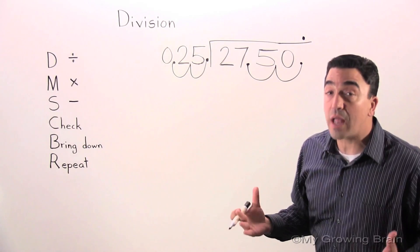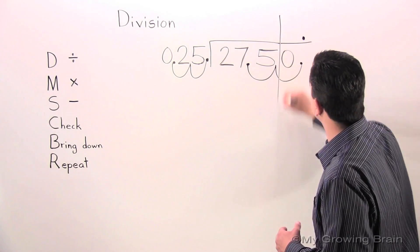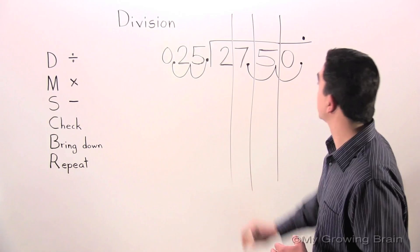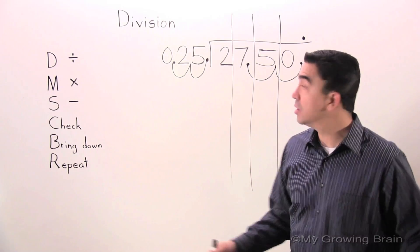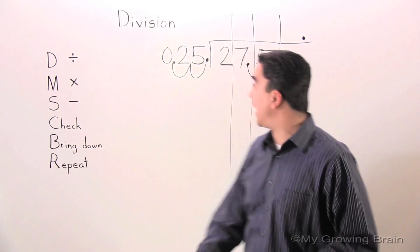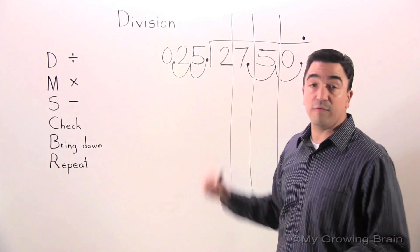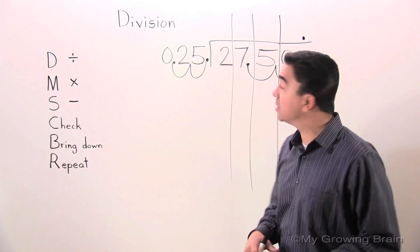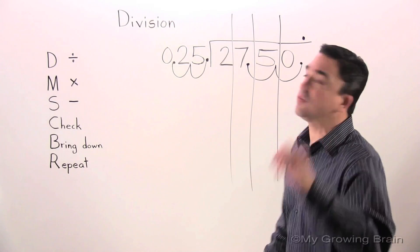Alright. Now, let's organize the problem. We're ready to go. So, first step, divide. 2 divided by 25 or 25 into 2. Can't do it! Use a zero.